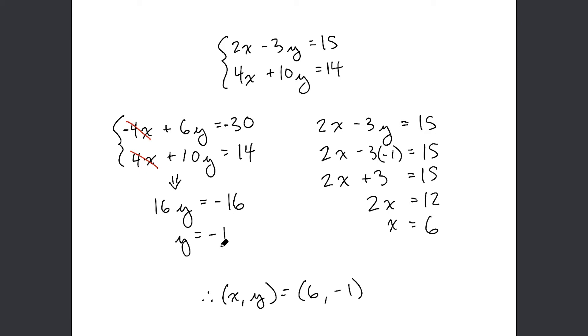From this point, once we have one of the variables, it's pretty straightforward. We can take either of these equations. I ended up taking the first one, so you substitute y equals negative 1 in for the y in the equation. Negative 3 times negative 1 equals 3. Subtract 3 from both sides, leaves us with 15 minus 3 is 12.